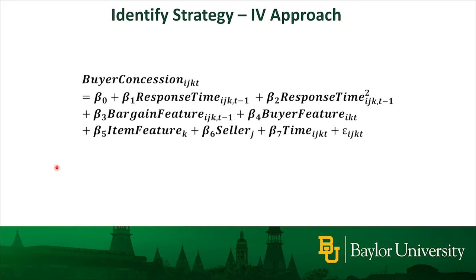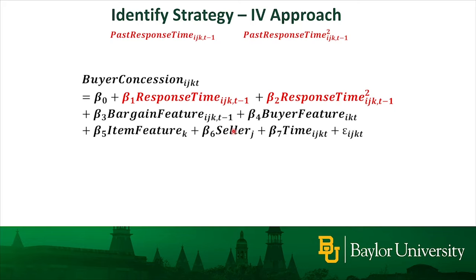We obtained a large dataset from eBay's Best Offer platform. This is our main model. We include both the linear term and the quadratic term of the seller's response time to capture potential non-linear effects. To address potential endogeneity issues, we use the seller's response time in previous bargaining with different sellers to construct two instrumental variables. We also control for a large number of bargaining features, buyer features, and item features. We include time fixed effects and use a seller fixed effects model. As we can see here, the model is quite complicated.